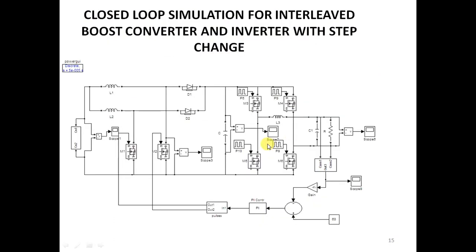In closed loop system, we sense the actual voltage. This is the reference voltage. Error, we give it to the PI controller. Output of the PI controller, we give to the comparator. Comparator gives updated pulses. These updated pulses are applied to the switches of the boost converter.